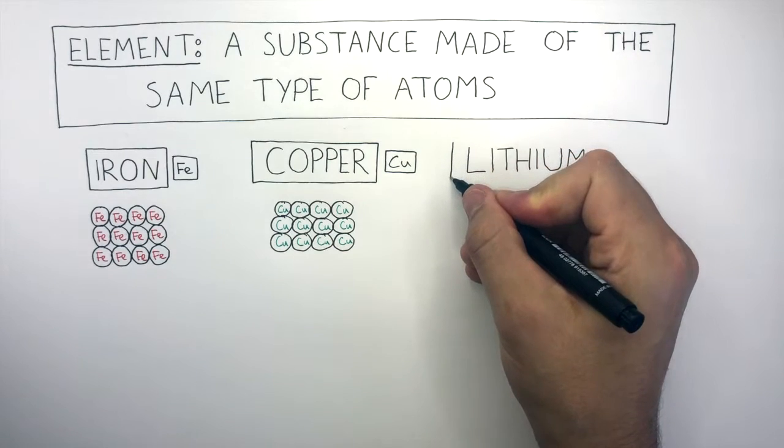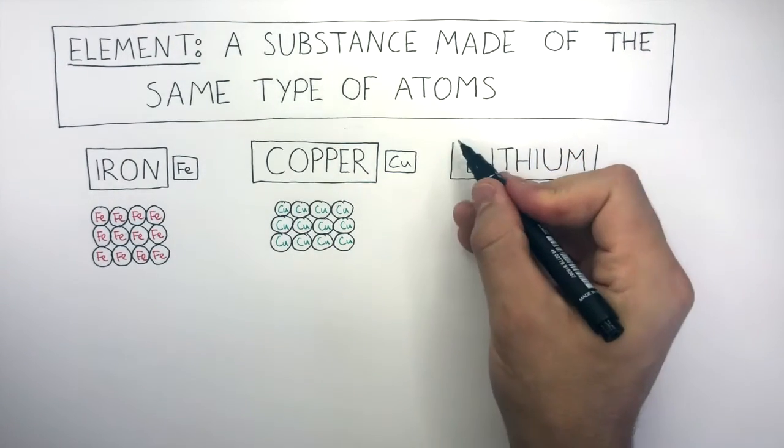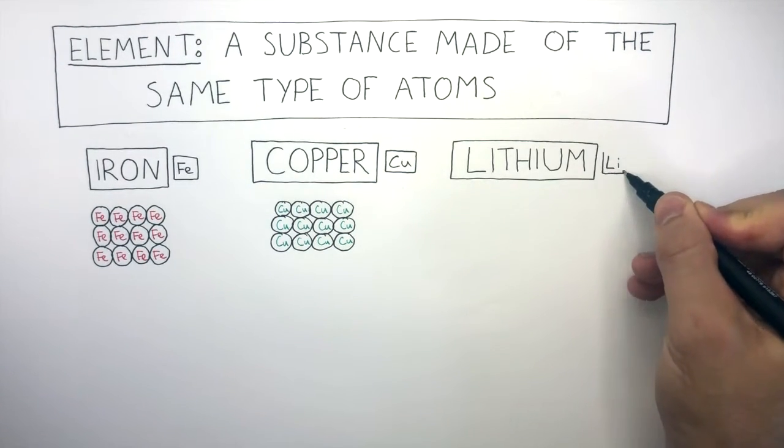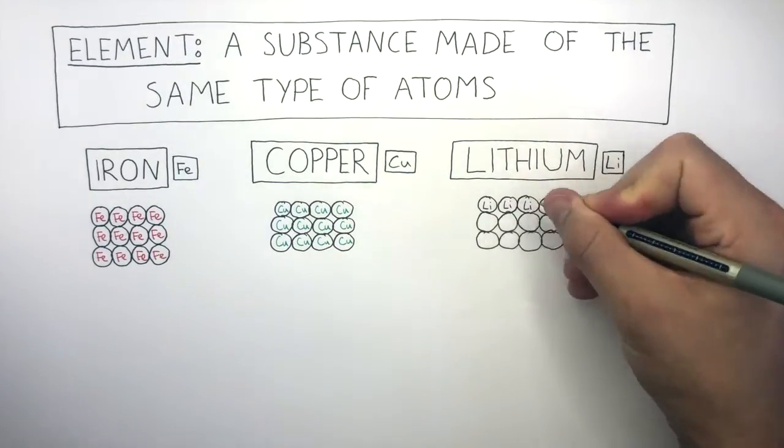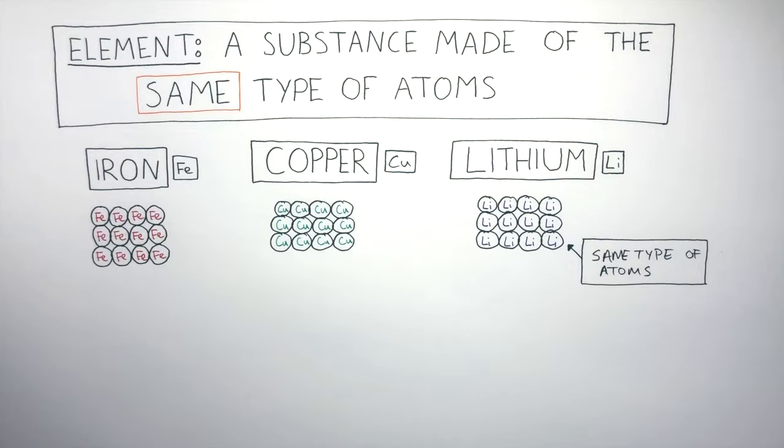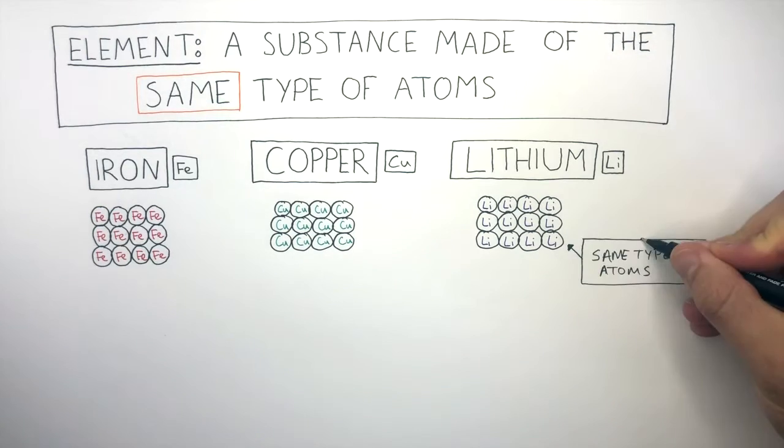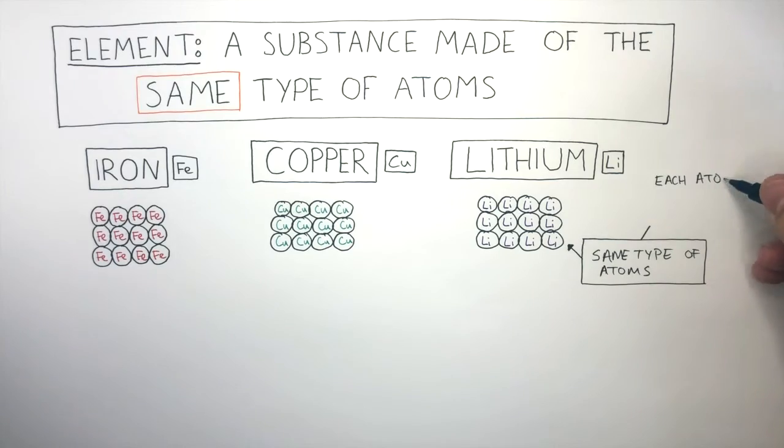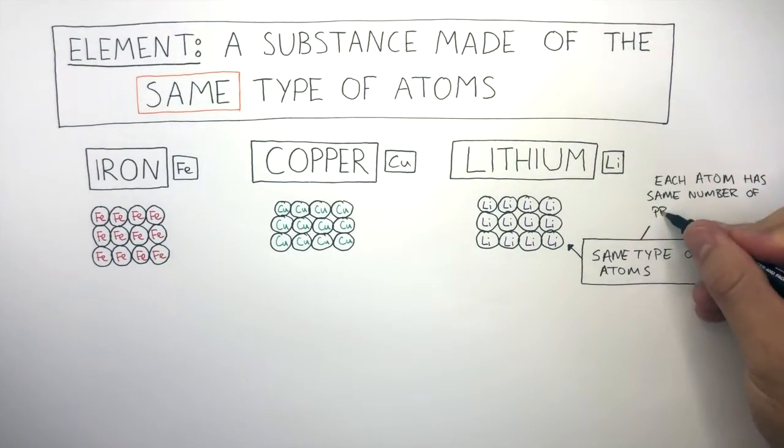Lithium is another metal in the periodic table. And its chemical symbol is Li. The particle diagram shows how it has the same type of atoms therefore it is an element. These are the same atoms because each atom has the same number of protons.